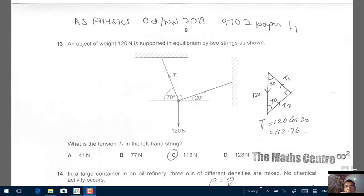Hi, welcome to the MathCenter.com. In this video we are going to be looking at three multiple-choice questions. They appeared on the exam AS Physics, October November 2019, subject code 9702, paper 11.